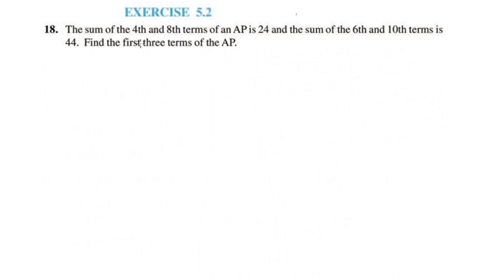The sum of the 4th and 8th term of an AP is 24, and the sum of the 6th and 10th term is 44. Find the first 3 terms of the AP.